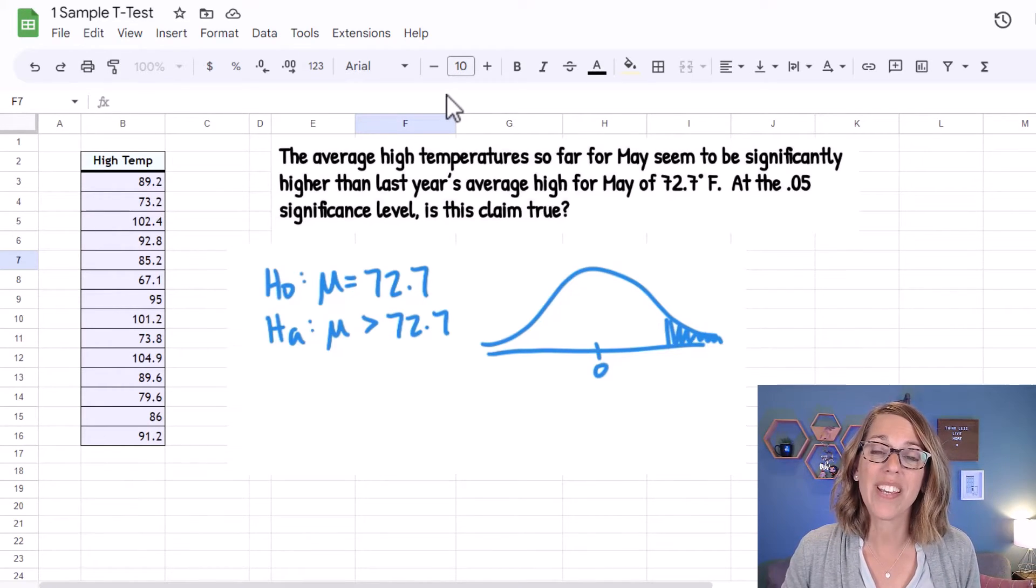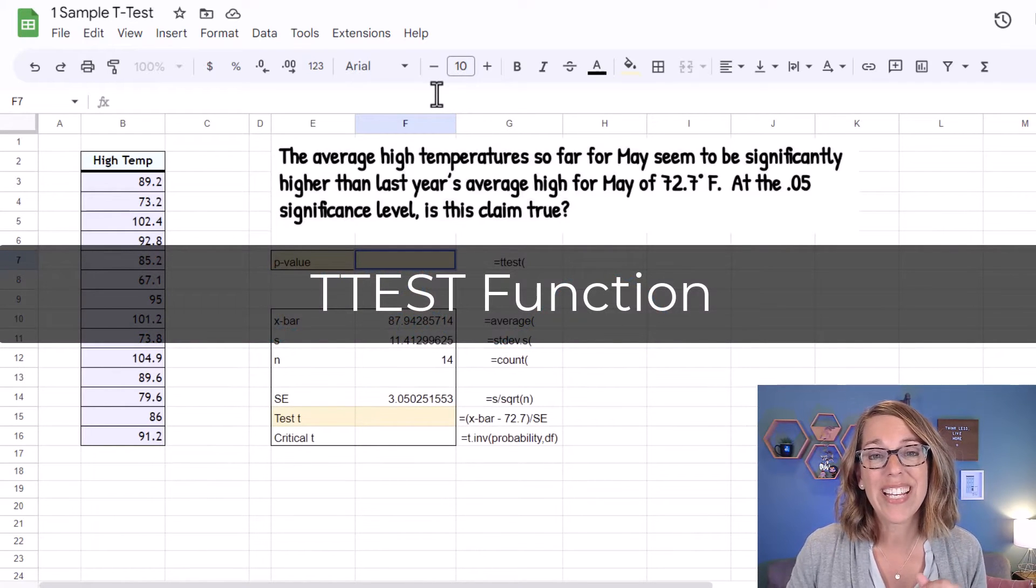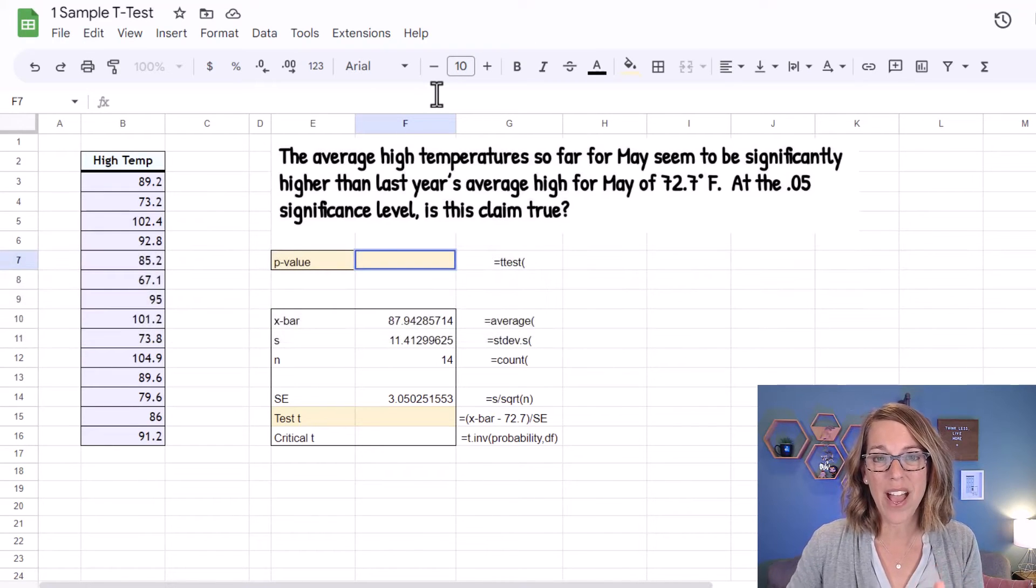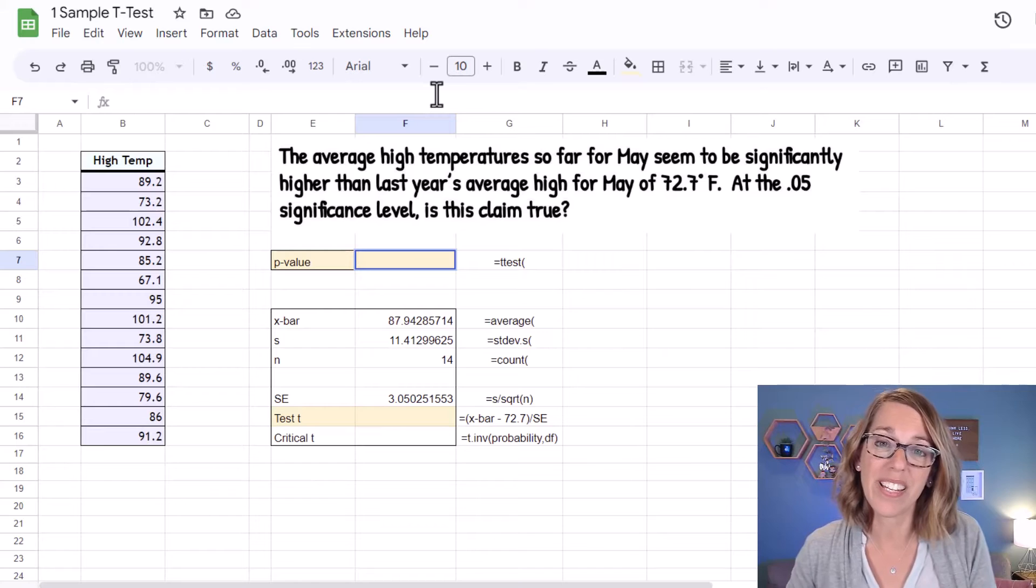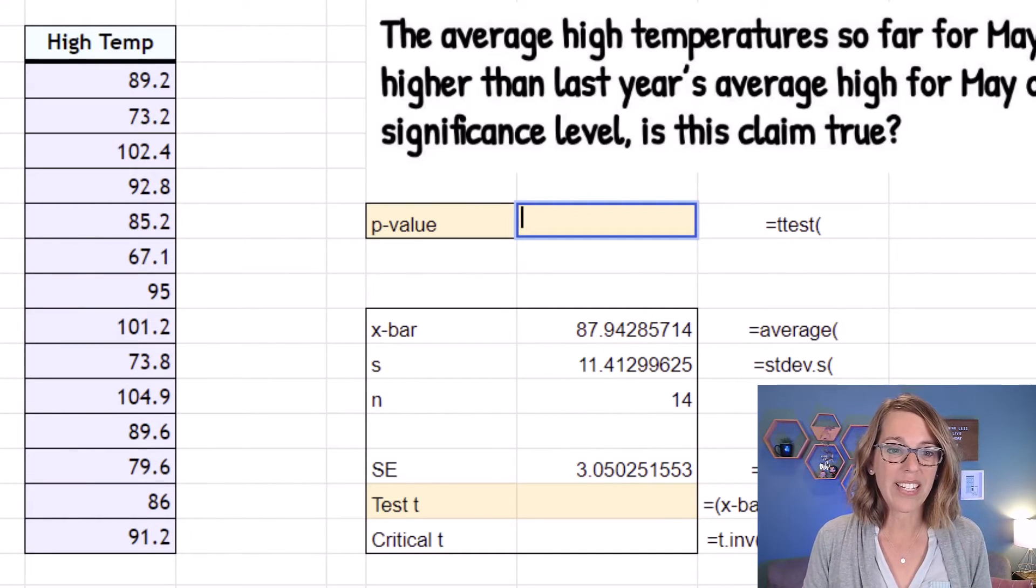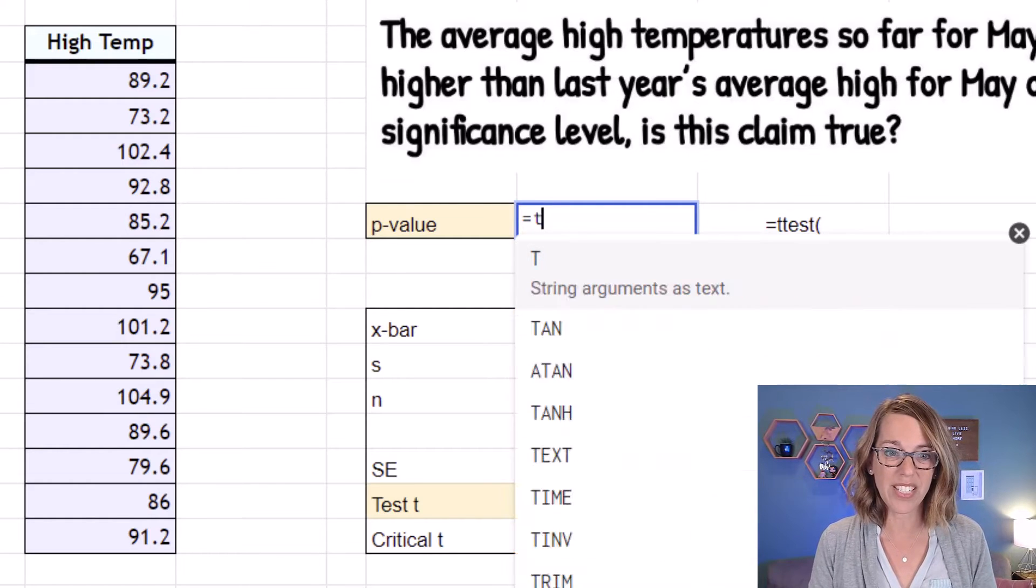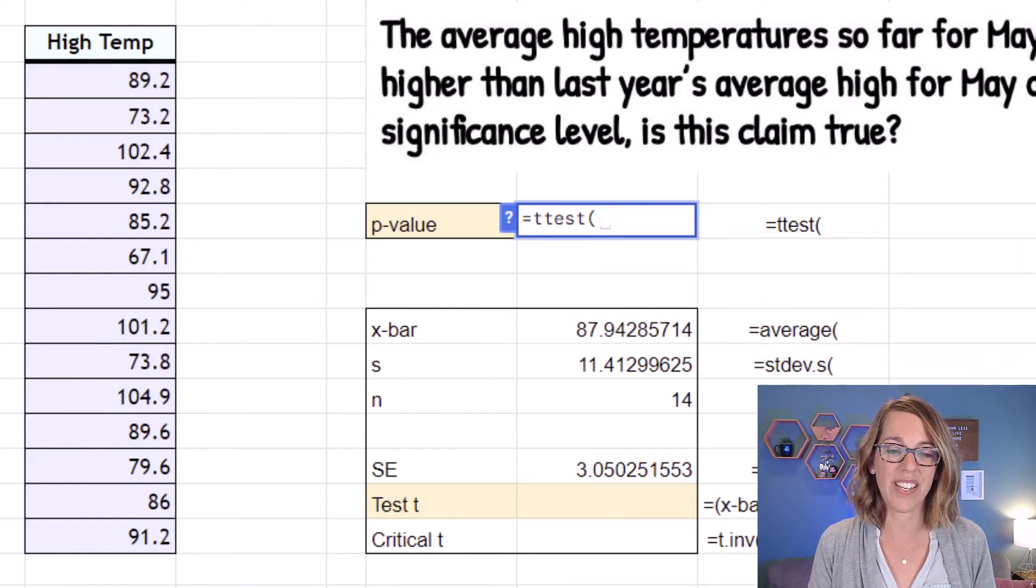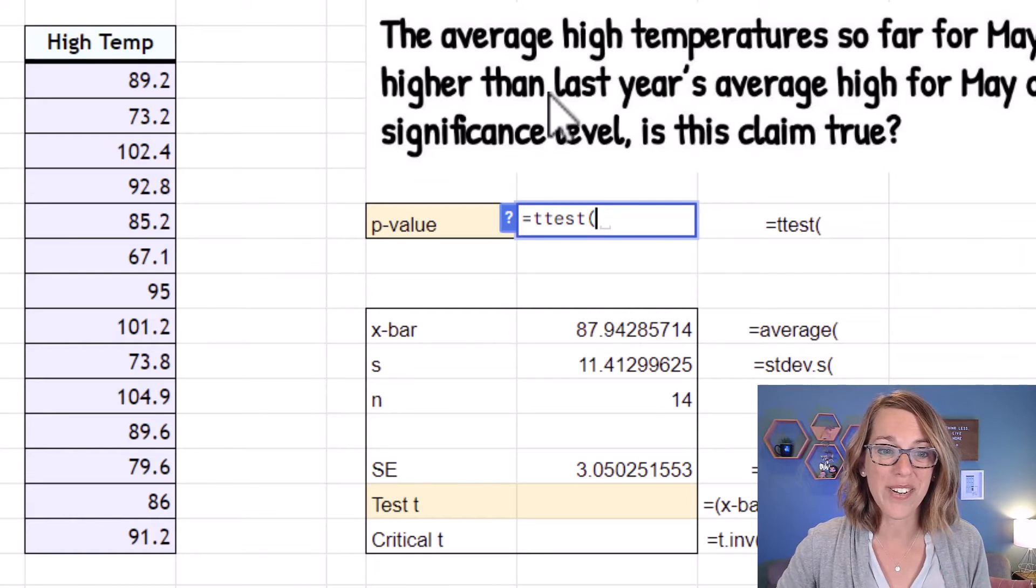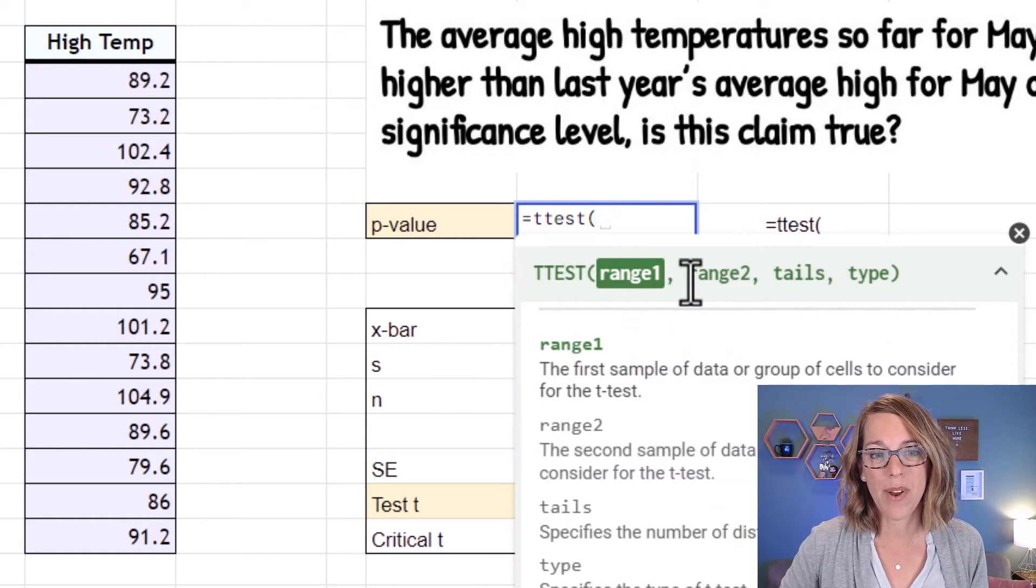Now the first way that we can get information for our test out of Google Sheets is to use the equals t-test function. This is going to give me the p-value back only, or the probability associated with our sample mean. I'm going to go ahead and type this into my p-value here, and I'm going to type in equals t-test parenthesis. Now mine didn't pop up with the parameters, but I want to know what those are, so I'm going to click on the question mark, and it's got my parameters.